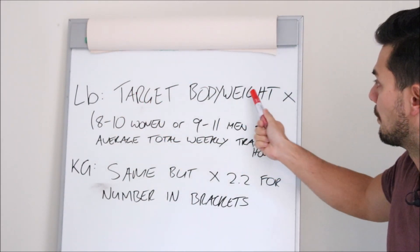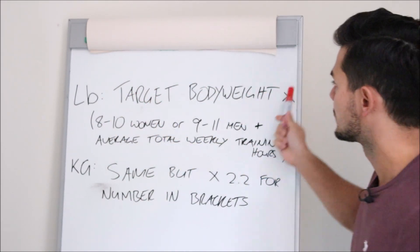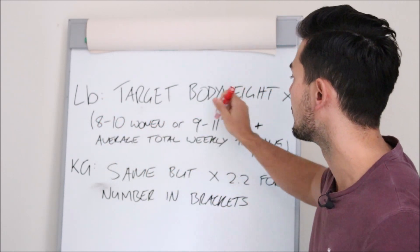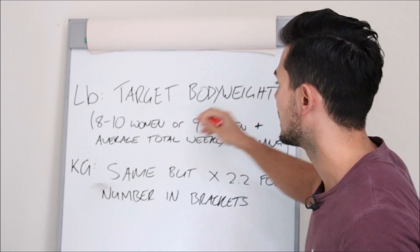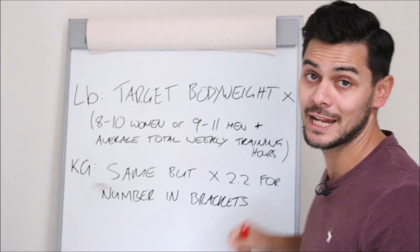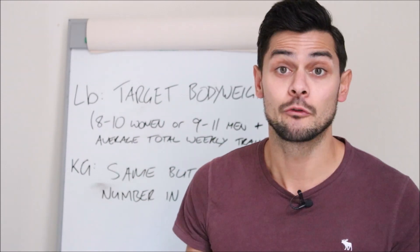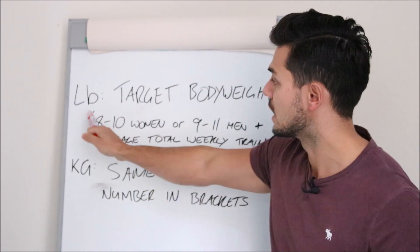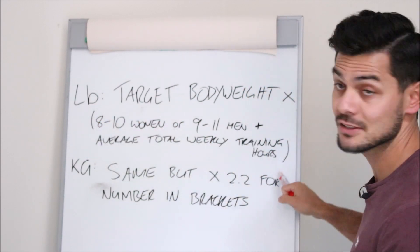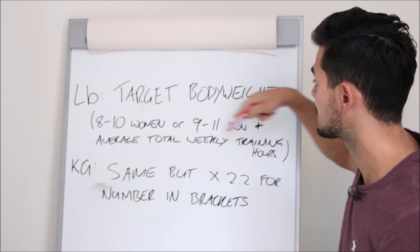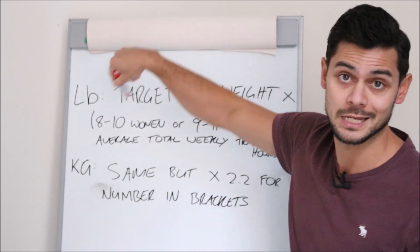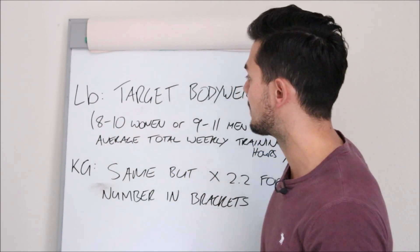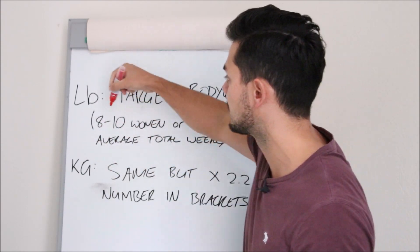In pounds, it's your target body weight times eight to 10 for women or nine to 11 for men, plus your average total weekly training hours. If you remember maths, then any part of the equation — we have to work out the part in brackets or parentheses first, before we times it by target body weight. So what do these numbers mean?